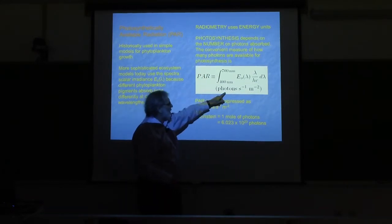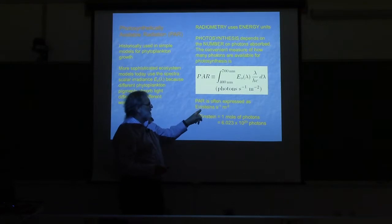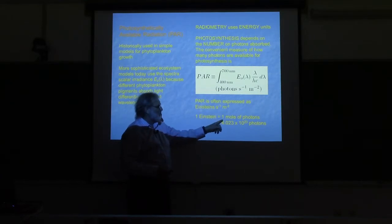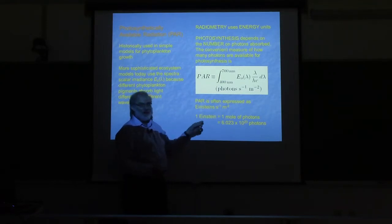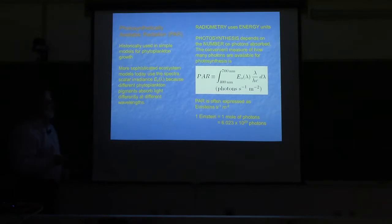This will be a number like 10 to the 20th or something. PAR is often expressed in Einsteins per square meter per second, where an Einstein is by definition one mole of photons or Avogadro's number of photons.